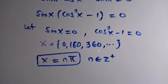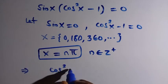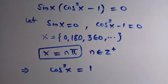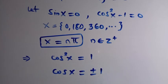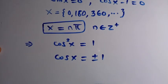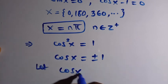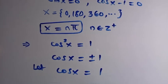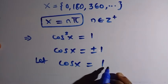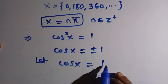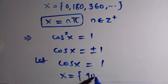For the second case, cos squared x minus 1 equals zero. We move 1 to the other side to get cos squared x equals 1, then take the square root of both sides, giving cos x equals plus or minus 1. We now consider two sub-cases. First, letting cos x equal positive 1, we find the values of x that satisfy this.